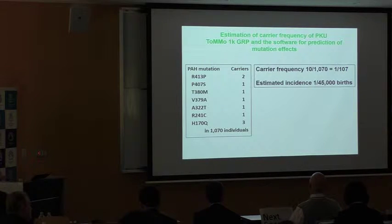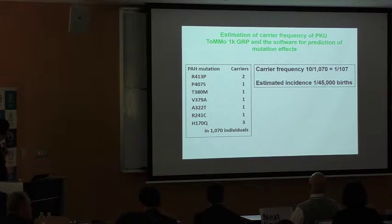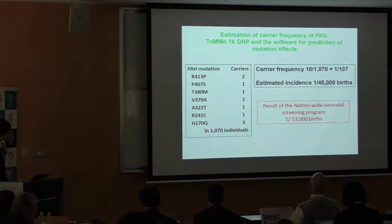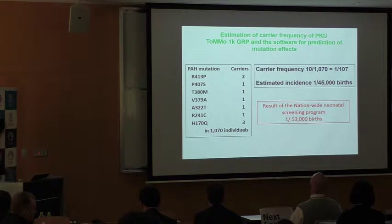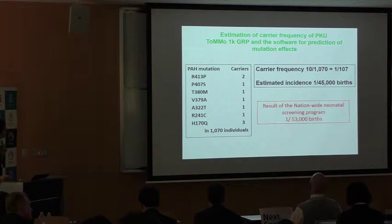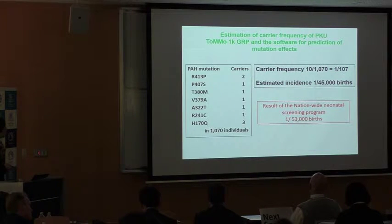By Hardy-Weinberg Equilibrium, the estimated incidence of PKU in Japan is 1 in 40,000 — closely matching the screening program result of 1 in 53,000. PKU screening is performed in Japan, so the exact number of patients is already known. However, most diseases are not known, so we can extend this system to diseases with unknown patient numbers.